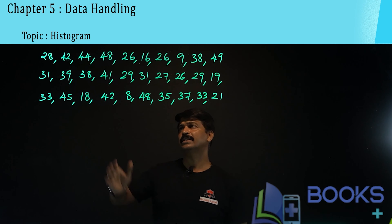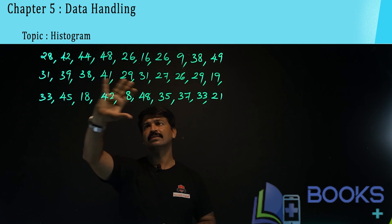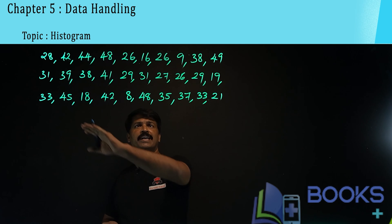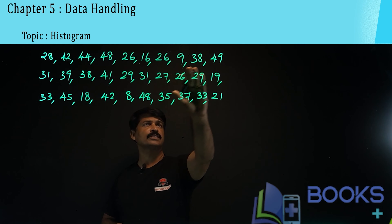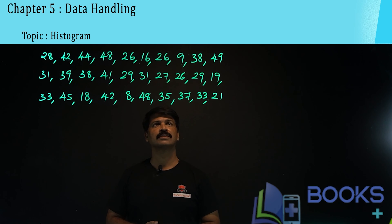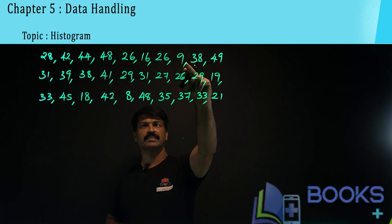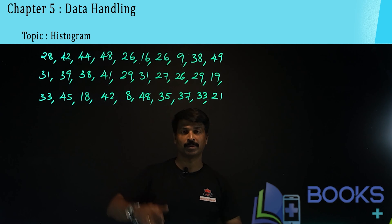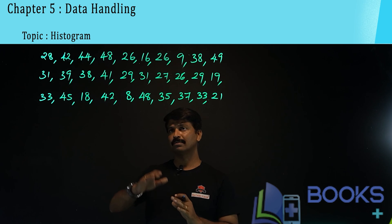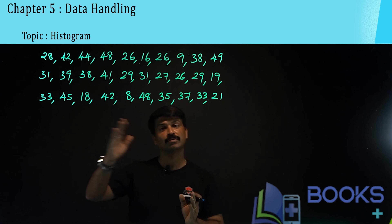Can you tell me what is the maximum mark given here? The maximum mark is 49. What is the minimum mark? The minimum mark is 8. So the marks range from 8 to 49.